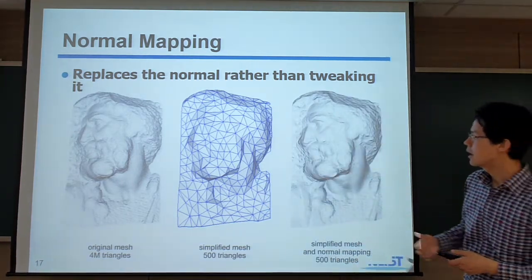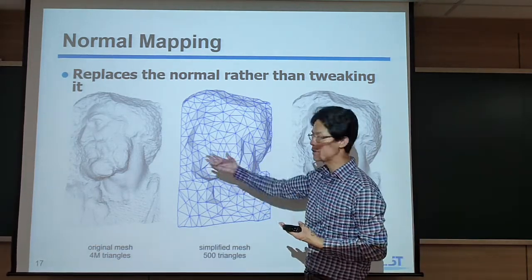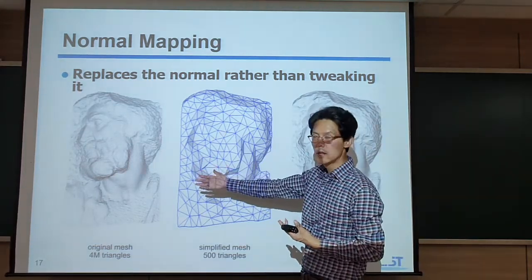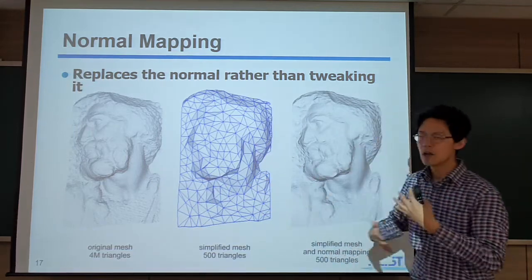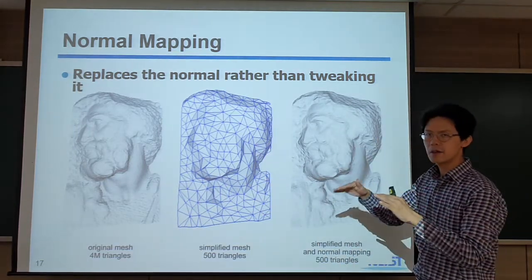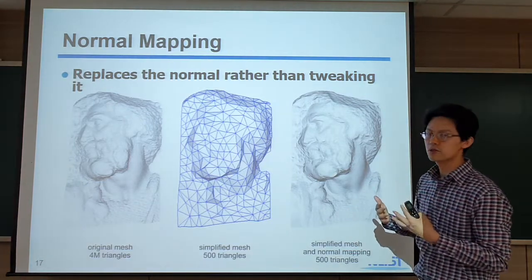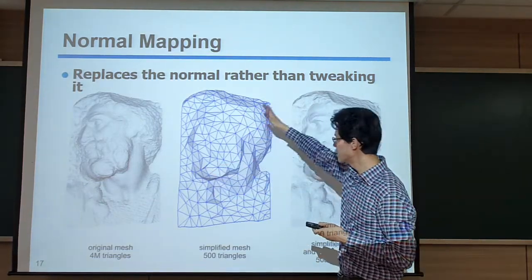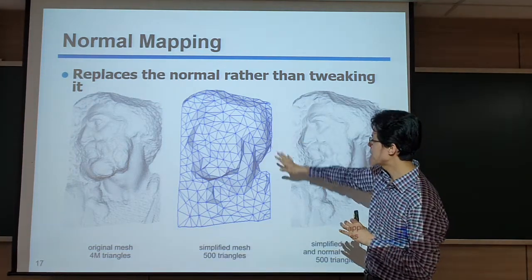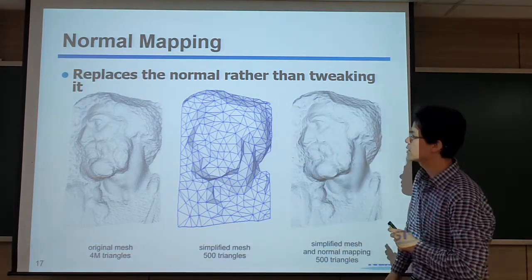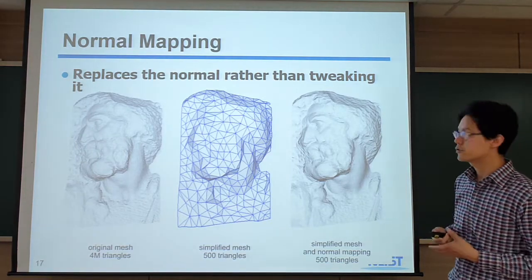Some of you may note that here we store an additional texture map. But the texture map is a kind of 2D regular data structure, so it's much more easier and efficient to access this 2D array, instead of directly handling many many triangles, which is an irregular data structure.